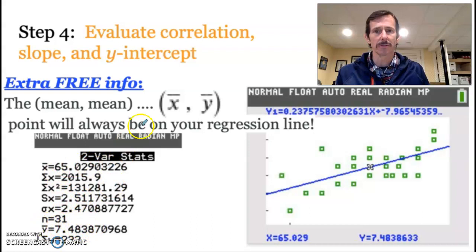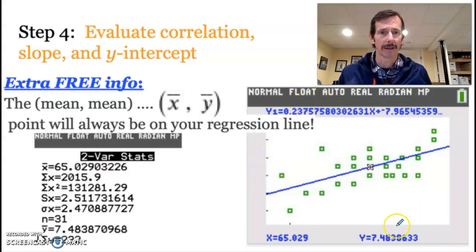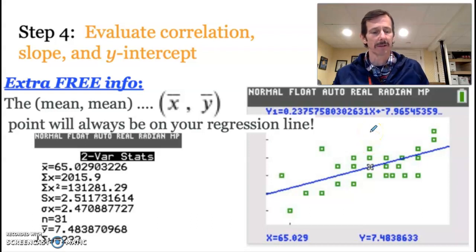So each of these variables, the heights and the shoe size, both have their own distributions. That's what we've been talking about before today. Now we're putting those together. They still each individually would have their own distribution. This is what you look like when you pair them. But what I did is I took this 65.0293, and I plugged it into my regression equation. And it gave me an output of 7.48. There it is. That is your y bar or your y average. So this is just showing you that x bar, y bar, that point is on every regression line. And it's on the model itself.